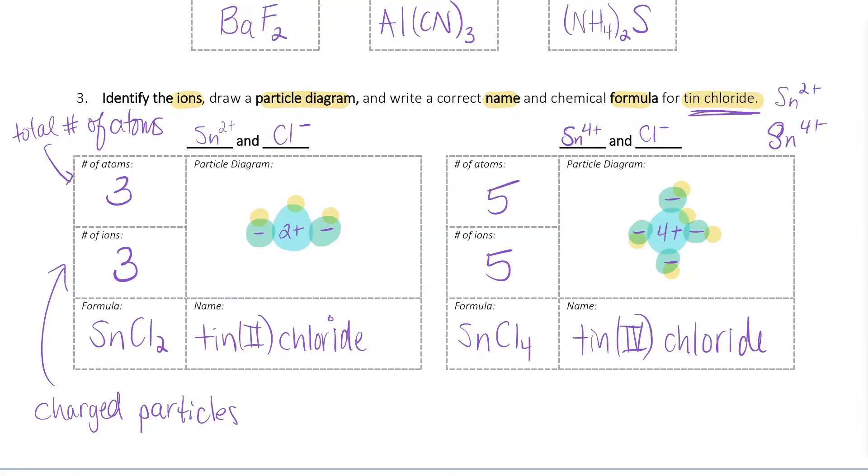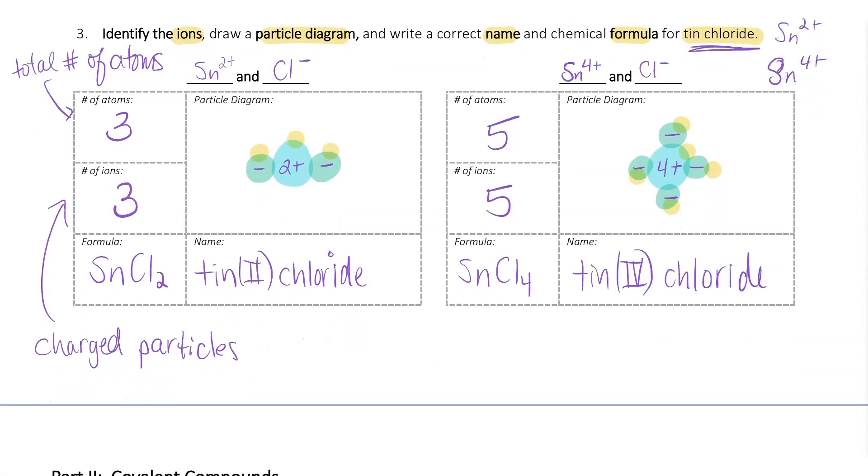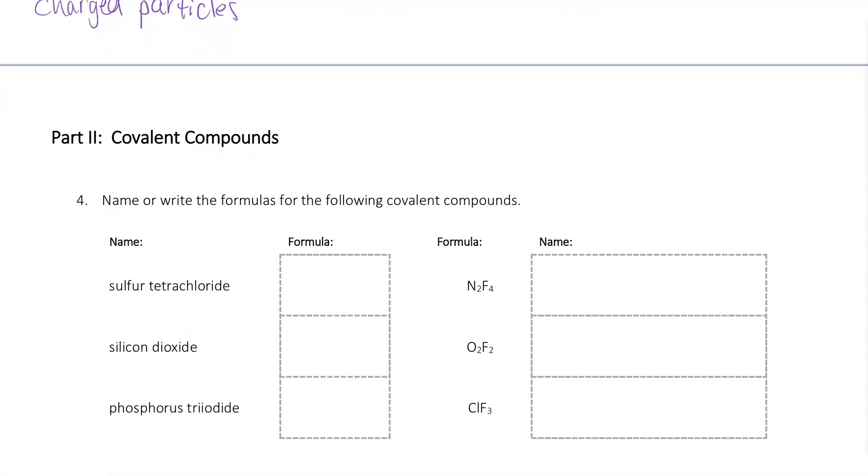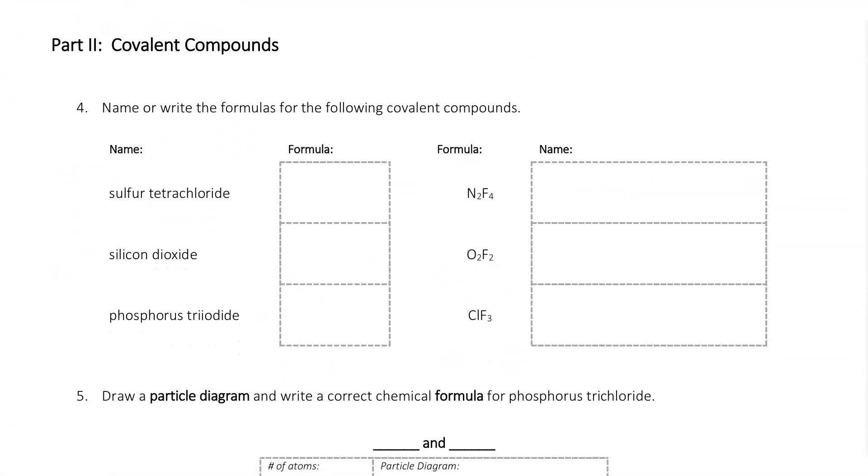Ionic names and formulas and particle diagrams are trickier than our covalent or molecular ones that we have on the other side, and that's because we always have to consider those charges. When we're looking at our covalent compounds, these are going to have nonmetals only. The other thing we need to know is that there are no charges here. You should see this because if you try to use charges, you're going to see that they're all going to be negative. That's why we use our prefixes when we name and write these formulas.